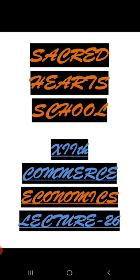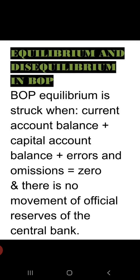We will cover equilibrium and disequilibrium in BOP, as well as autonomous and accommodating items, and significance of BOP. First of all, equilibrium and disequilibrium in BOP. As you know, the meaning of equilibrium is the state where LHS equals RHS — the point where left hand side and right hand side become equal. We call that BOP equilibrium, and when that same condition occurs with BOP, it is termed as BOP equilibrium.